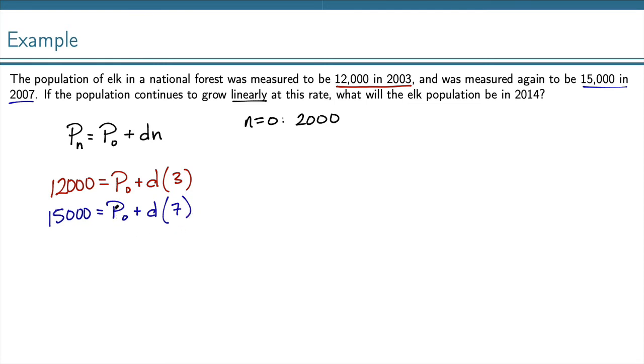So, now I have this system of equations, and I can use this to solve for both my P0 and my D. If I go ahead and take this first and just solve for P0, I get P0 equals 12,000 minus 3 times D.